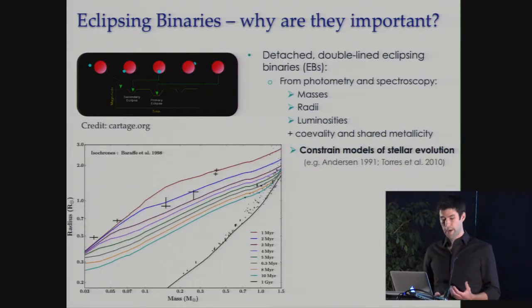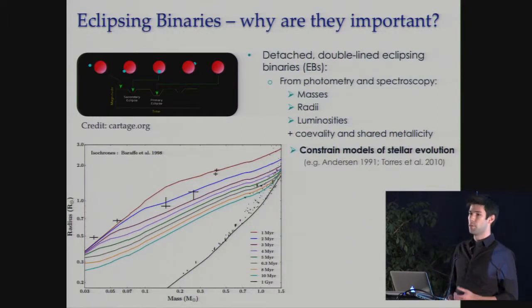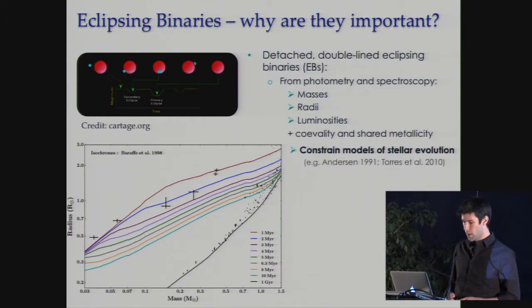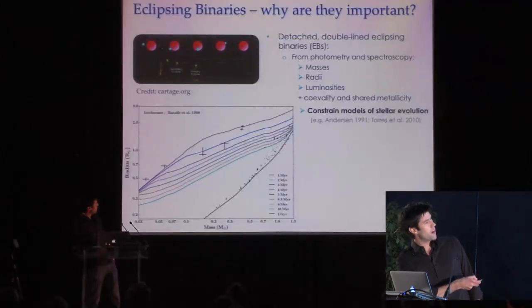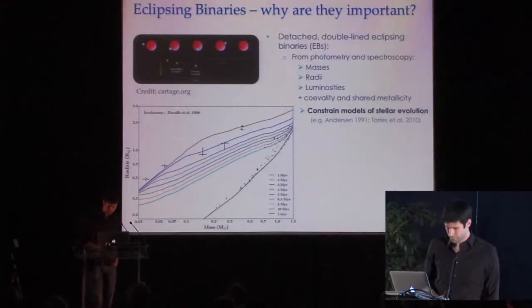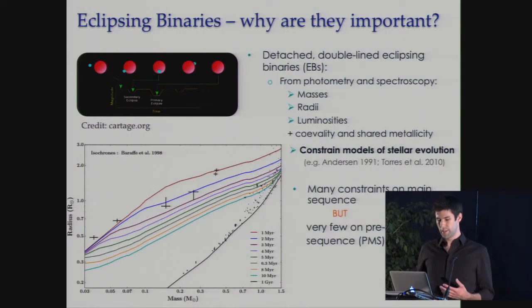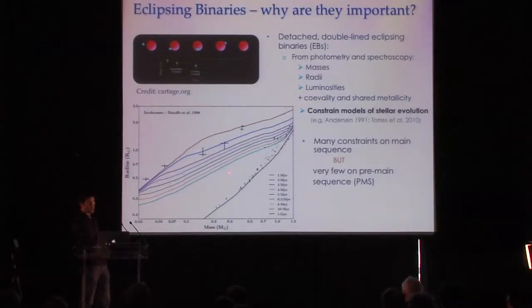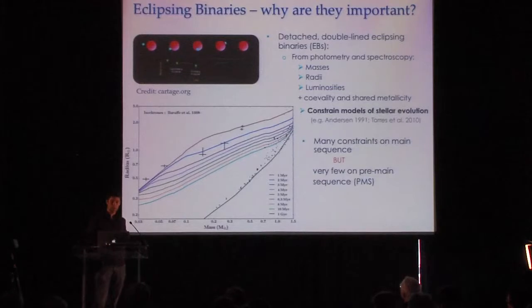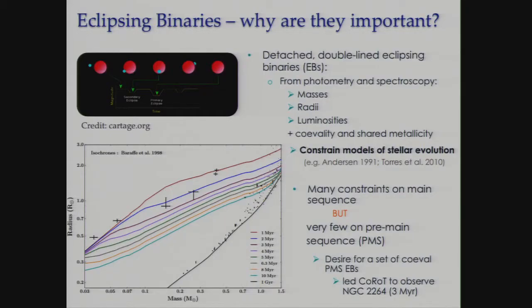Here I'm showing the mass-radius relation for detached eclipsing binaries below 1.5 solar masses, with pre-main sequence models of Baraffe et al. from 1 million years in brown to 10 million years in cyan, and the black line indicating the main sequence. While there are many observational constraints on the main sequence, there are very few on the pre-main sequence — a key reason that led CoRoT to observe the 3-million-year NGC 2264 star-forming region back in 2008.